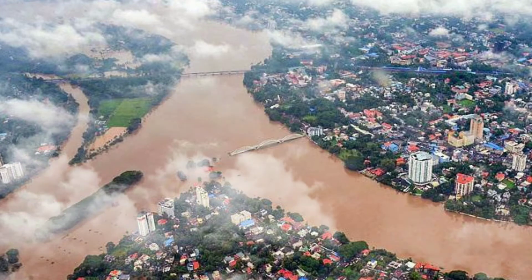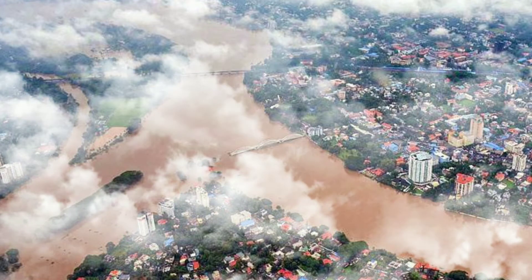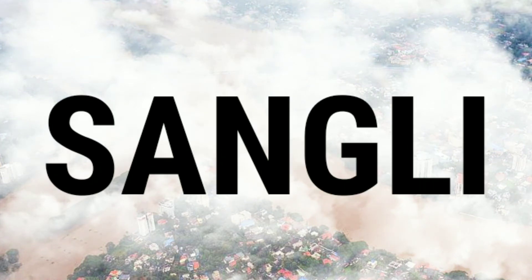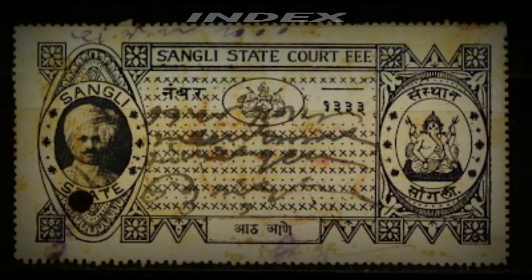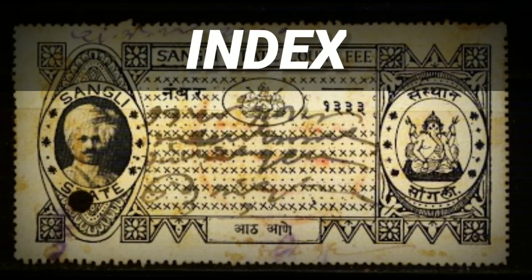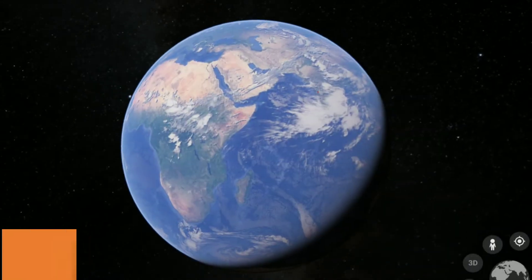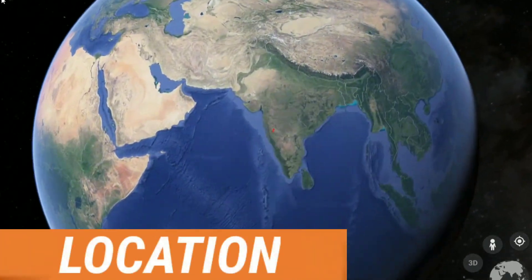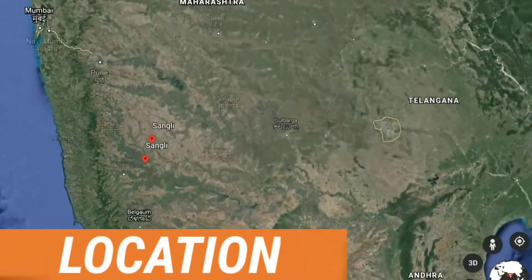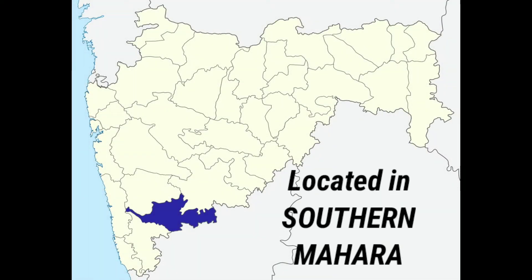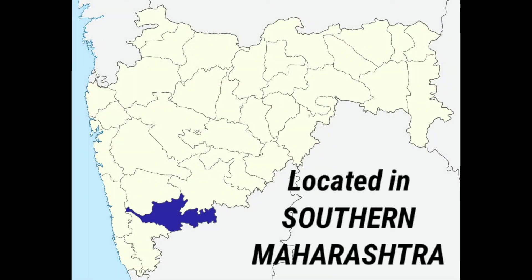Welcome. Today I am going to share information about the Sangli region, covering several key points. The Sangli region lies in India, in the state of Maharashtra. It is located in the southern part of Maharashtra.